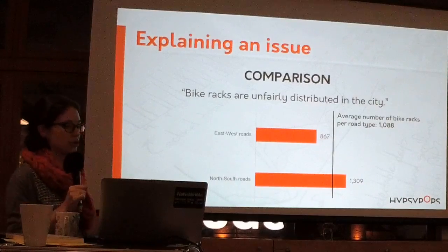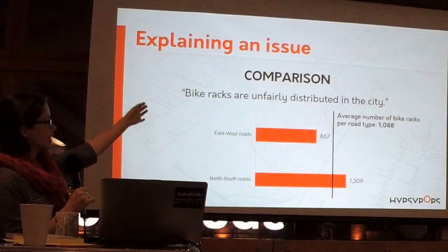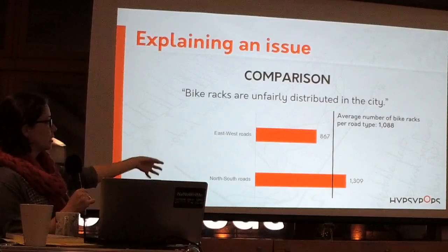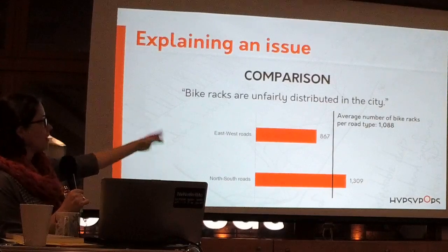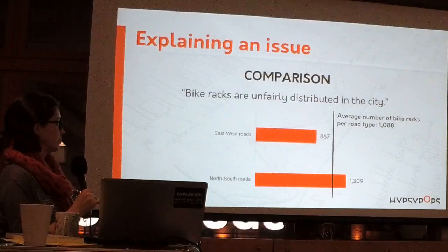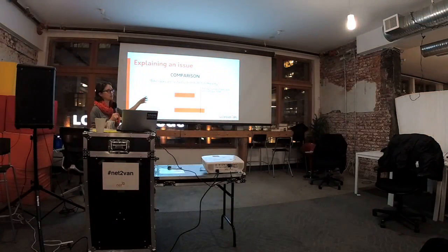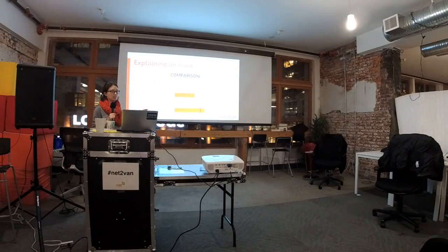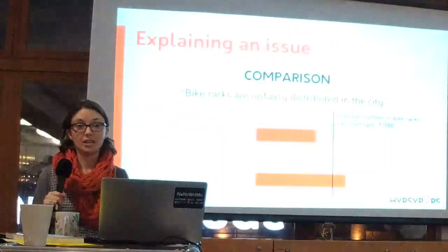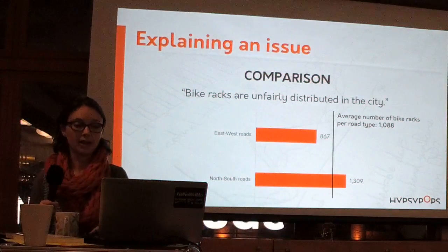Then you start getting into annotations. This is a row chart — a bar chart flipped over sideways — but now I'm starting to add a little more information. The average number of bike racks per road type is just over a thousand, and you can see how things match up against that benchmark. I am a big fan of annotating graphs, though you want to do it strategically — you don't want to turn them into chart clutter.